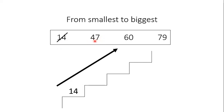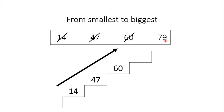Now again see the first digit of each remaining number: 4, 6, and 7. Which number is the smallest? Yes, 4 is the smallest. So number 47 is the next smallest number. Now here we have two numbers: 60 and 79. Again we will see the first digit, 6 and 7. Which number is smaller? 6. So 60 — we will write 60 on the next step. Then we have only one number left, which is 79.